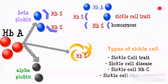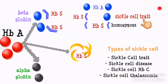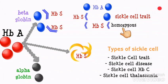The types of sickle cell include: sickle cell trait, sickle cell disease, sickle cell hemoglobin C, and sickle cell thalassemia. Sickle cell trait is when red blood cells contain both HbA and HbS — this is the heterozygous form; a person with the trait is a carrier and can pass the sickle cell genes to their offspring. Sickle cell disease is when red blood cells contain only abnormal hemoglobin HbS — the homozygous form — and it is the most severe form.